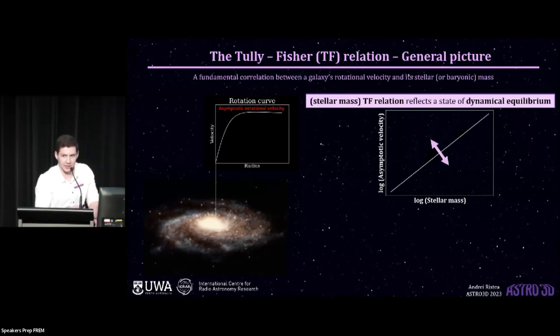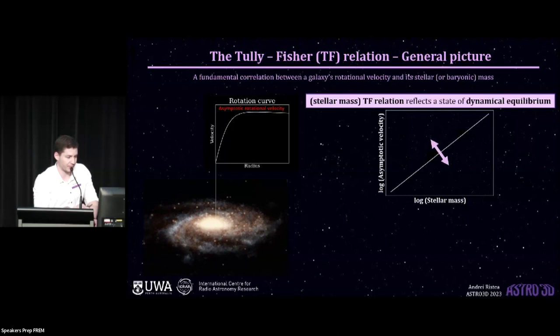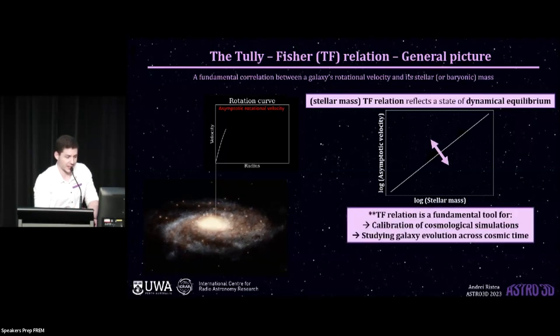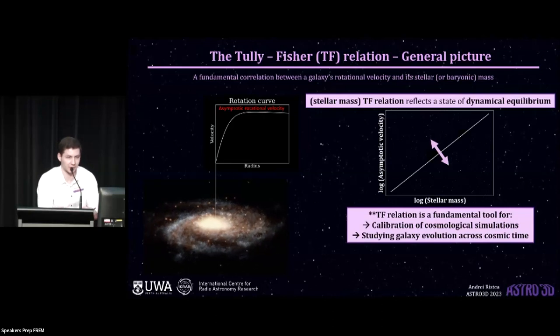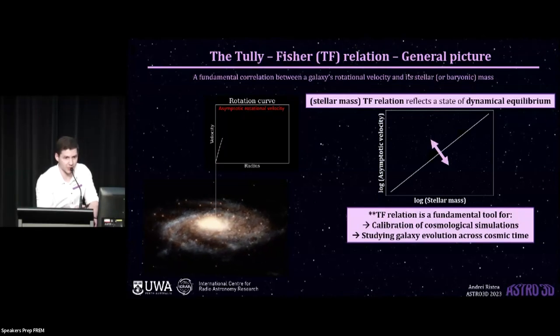Now, this relation reflects a state of dynamical equilibrium in our systems, and this equilibrium stems from the cosmological equivalence between mass and velocity. The mass and velocity of baryons correlate with the mass and velocity of dark matter halos. On top of that, we've got the effect of mergers, the effect of baryonic processes such as feedback, which may alter this state of equilibrium. And so because of these characteristics, the Tully-Fisher is a fundamental tool for calibration for cosmological simulations and also instrumental for tracing galaxy evolution across cosmic time.